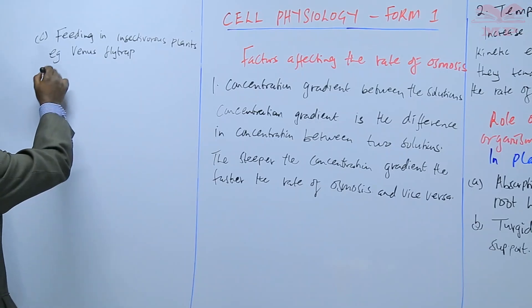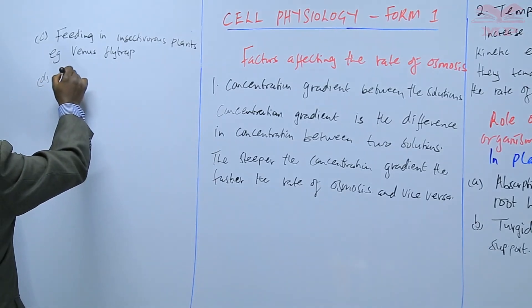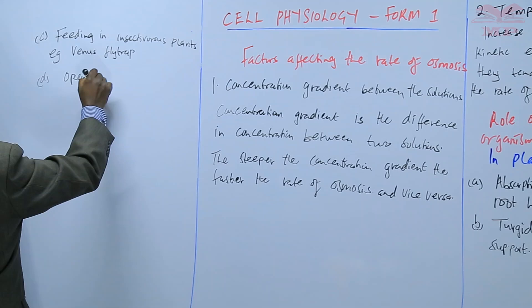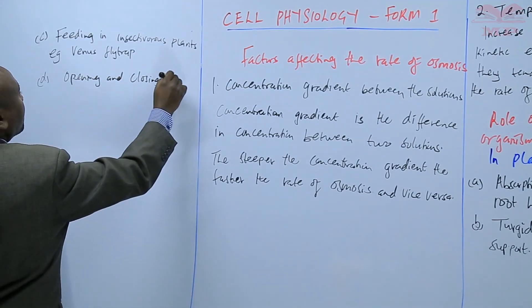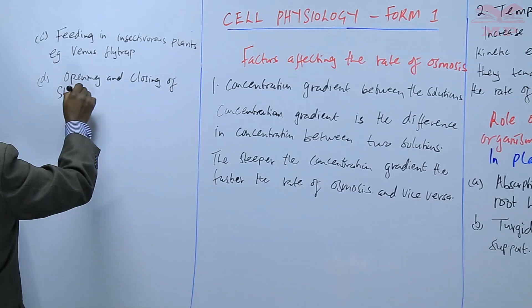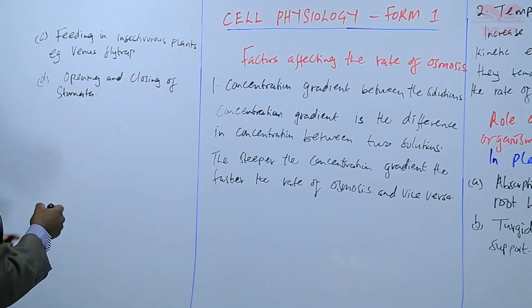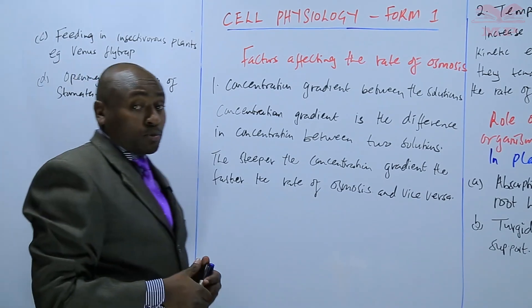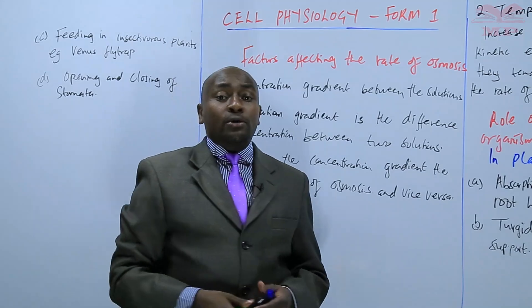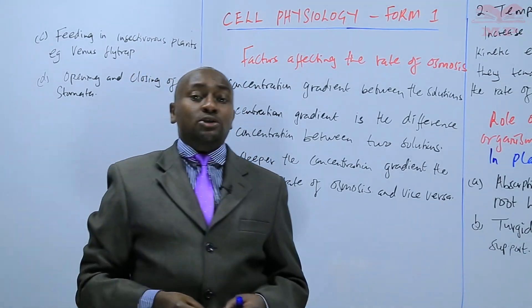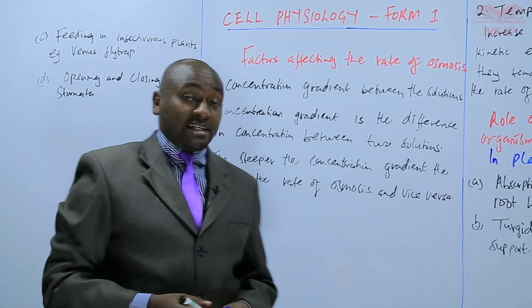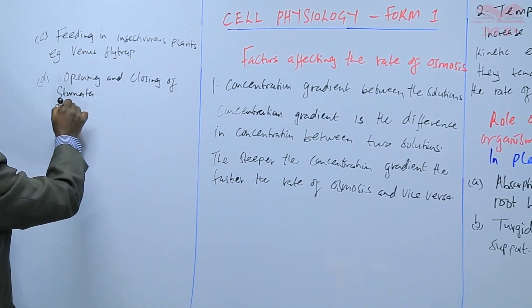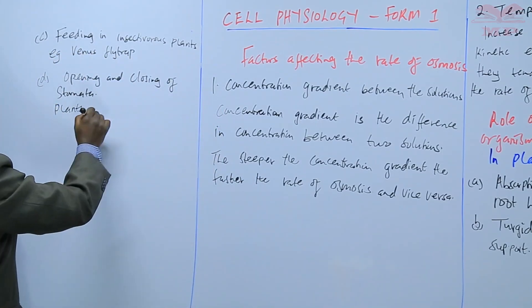Number D. Opening and closing of stomata is based on osmosis. For example, we know that plants open their stomata during the day and close them at night. So, that is controlled by osmosis.